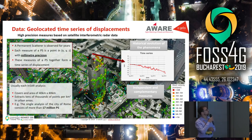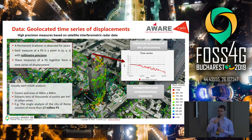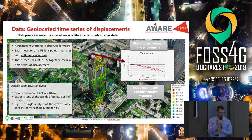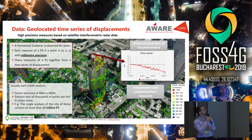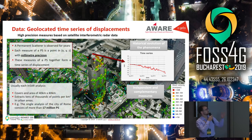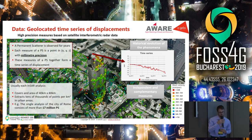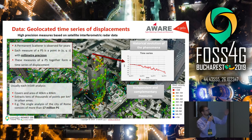The data that we have on our platform are geolocated time series of displacements. A permanent scatterer is like a sensor — we observe the sensor over time, and each measure of a permanent scatterer is a point in X, Y, Z with millimeter precision. These measures together form a time series of displacement, so we can monitor a building and understand the historical evolution of the phenomena, as we can see in this time series for one permanent scatterer.